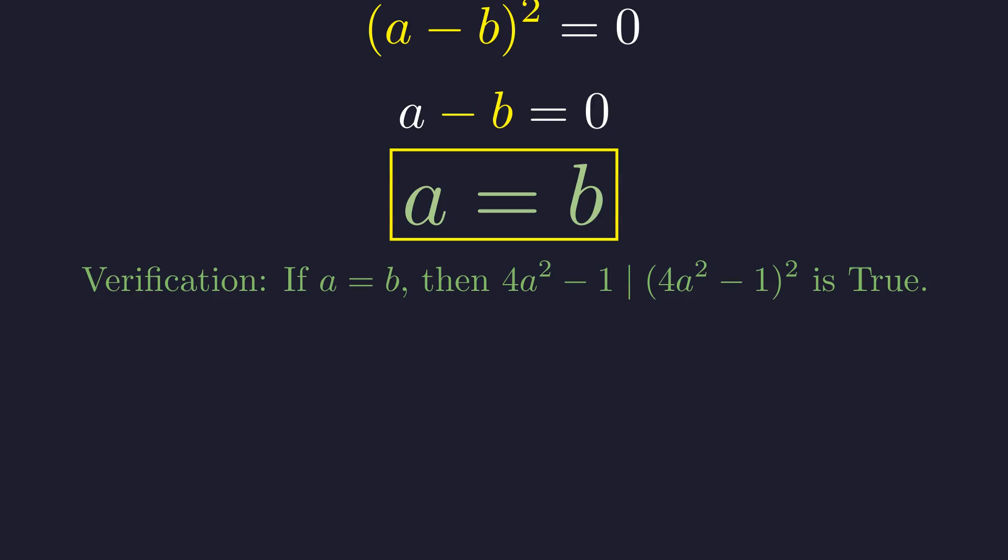We can verify this result. If A equals B, the original condition becomes: does 4 times A squared minus 1 divide the square of 4 times A squared minus 1. This is trivially true, as any integer divides its own square.